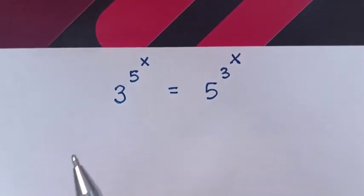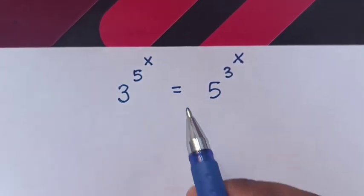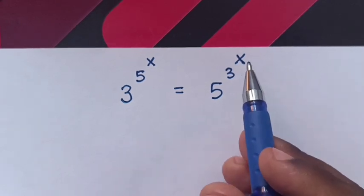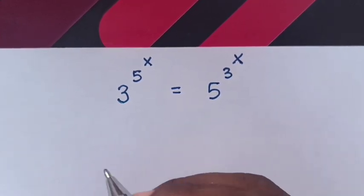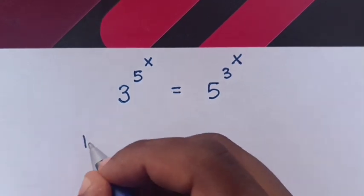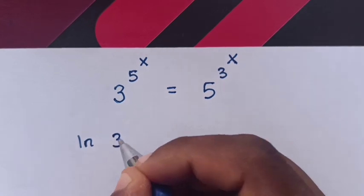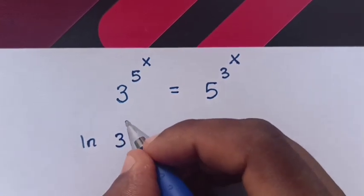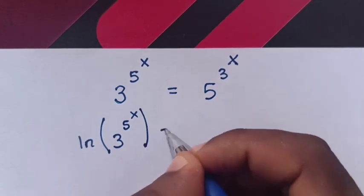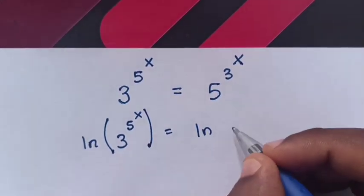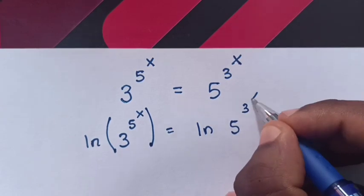Hello. How to solve 3 to the power 5^x is equal to 5 to the power 3^x. First, we will apply log to both sides. So it will be log(3^(5^x)) is equal to log(5^(3^x)).